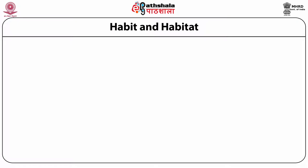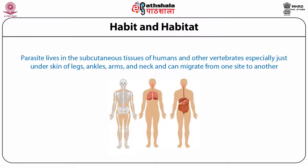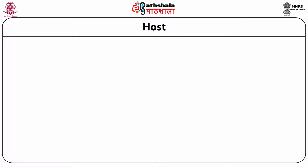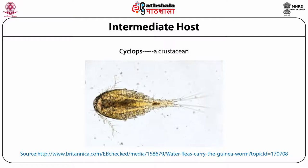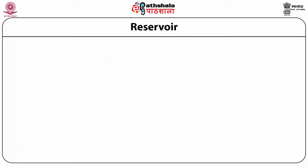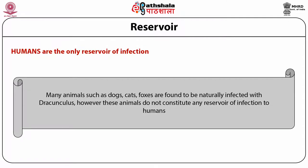The parasite lives in the subcutaneous tissues of humans and other vertebrates, especially just under the skin of legs, ankles, arms and neck, and can migrate from one site to another. Dracunculus medinensis is a digenetic parasite requiring two hosts to complete its life cycle. The definitive hosts are humans, dogs, cats and other wild animals. The intermediate host is a freshwater crustacean, cyclops. Humans are the only reservoir of infection.